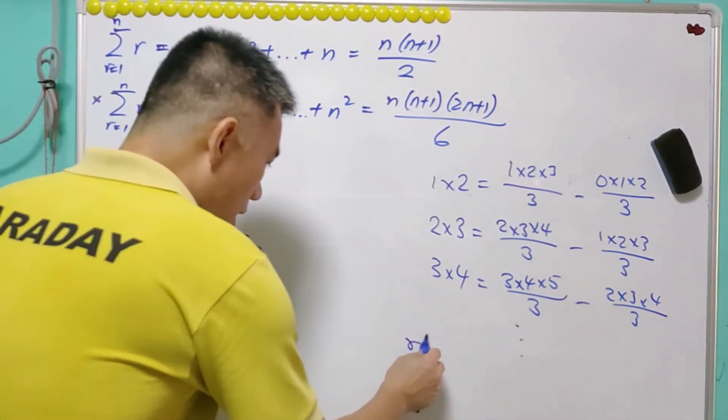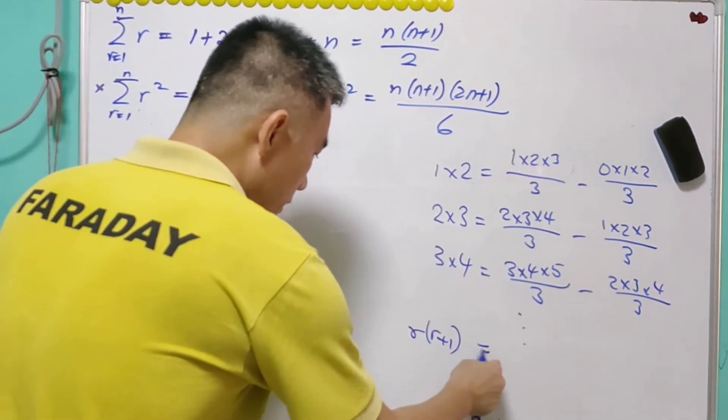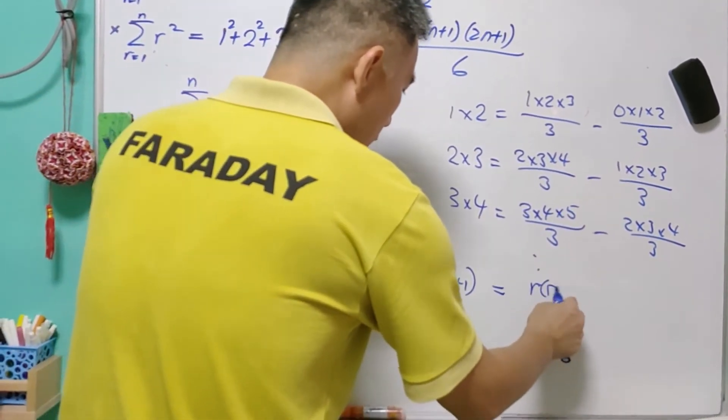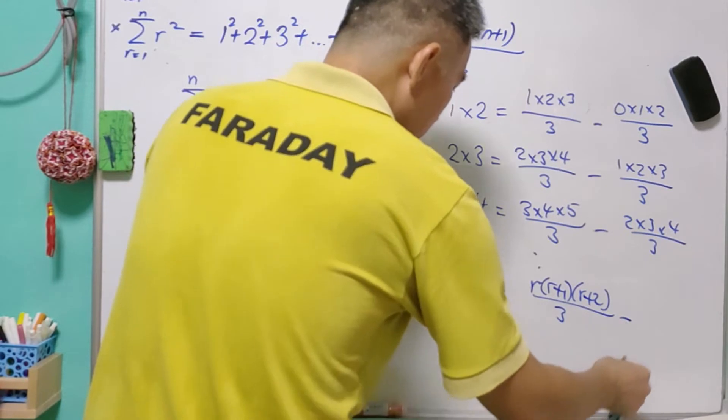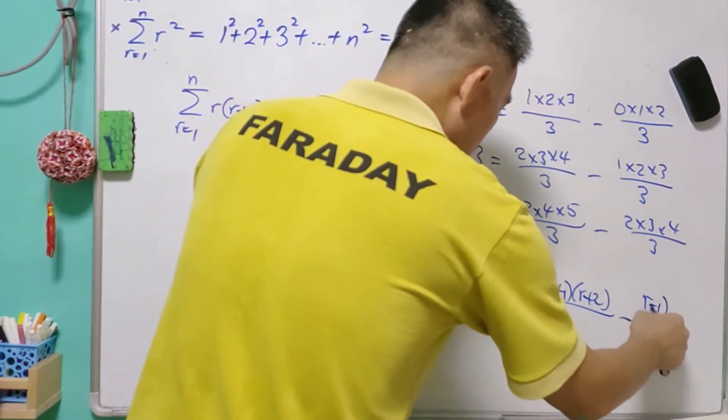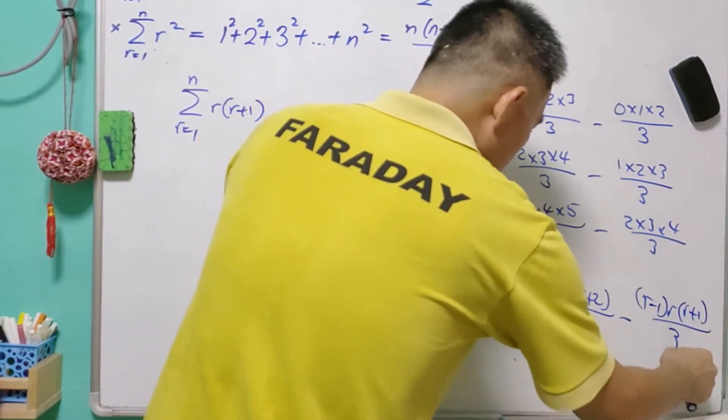It's simply because r(r+1) is equal to r(r+1)(r+2) over 3, minus (r-1)r(r+1) over 3.